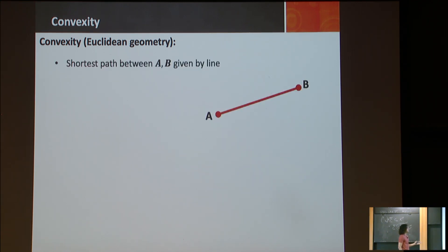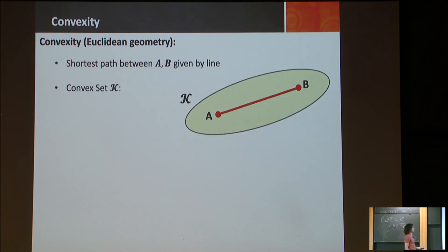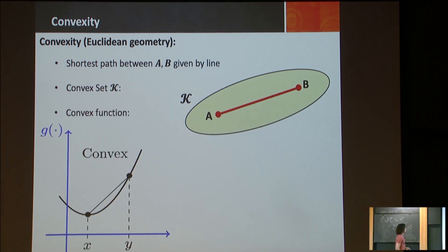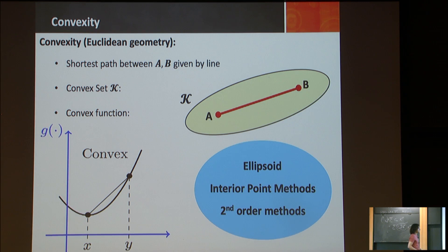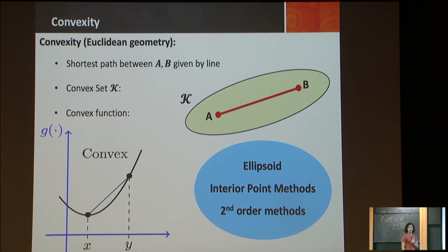In Euclidean geometry, the shortest path between A and B is given by a line. A convex set is a set where for every two points in the set, the line between them is also in the set. A function is convex if between any two points the value is always under the line between them. We love convexity — we have beautiful algorithms like ellipsoid, interior point methods, and Newton methods to minimize a convex function over a convex domain.